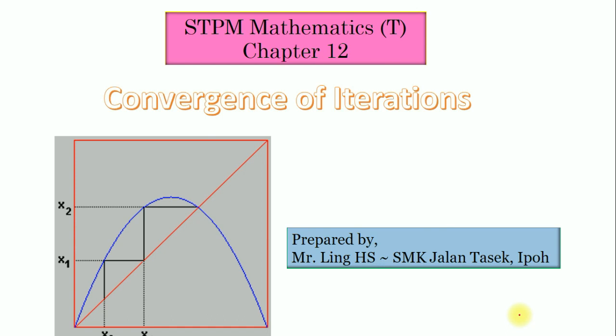It means that the process of iteration sometimes may converge to a root, and sometimes it may not — sometimes the iteration diverges, as the sequence of approximations does not reach a limit. The value of the approximation becomes bigger and bigger.